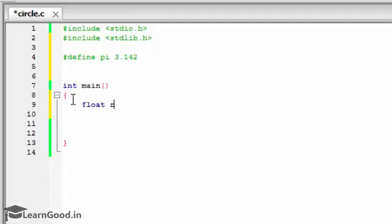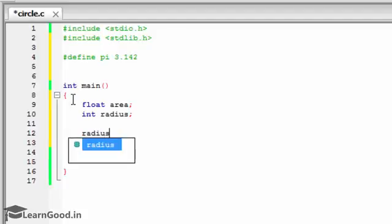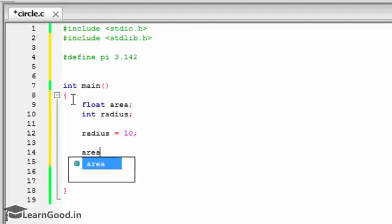Assign the radius value: radius equals to 10 as the radius. Give semicolon. Find out the area now by giving area equals to pi value 3.142 asterisk radius asterisk radius.